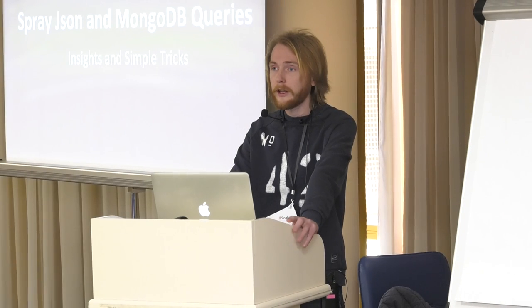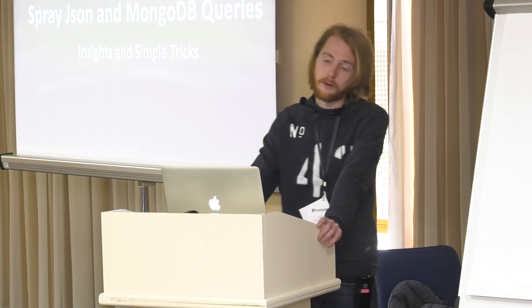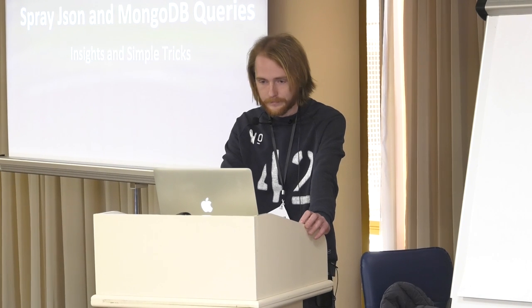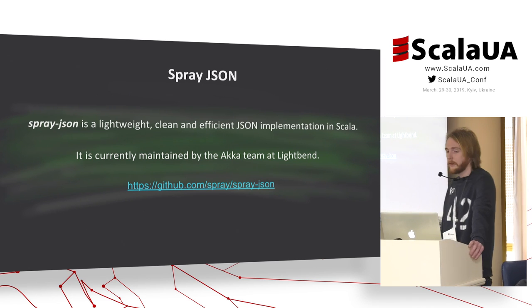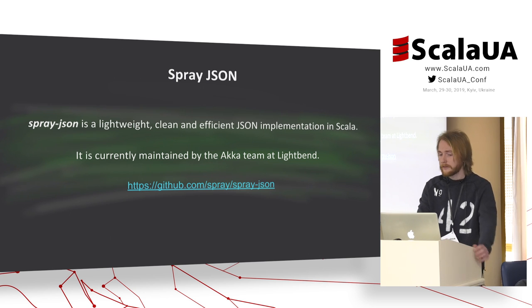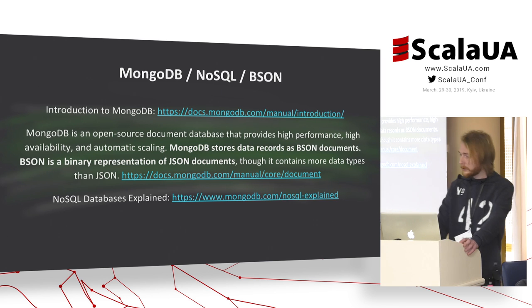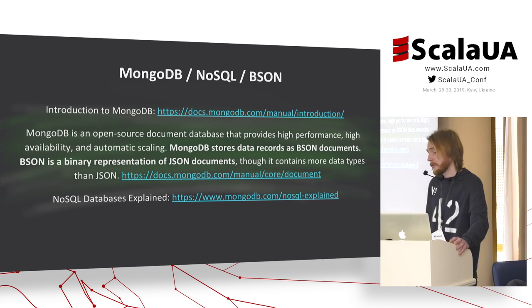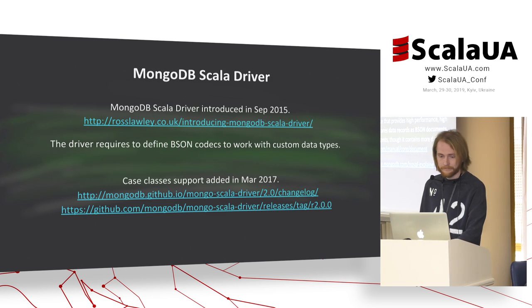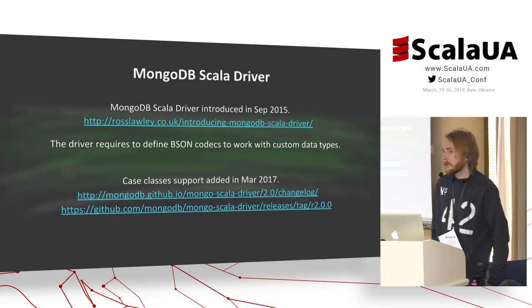Hello, and this presentation will cover creation history and implementation details of a simple extension built on top of the official MongoDB Scala driver. SprayJSON is a lightweight Scala library for JSON serialization, currently maintained by the Akka team at LightBend. MongoDB is a NoSQL database that stores records as BSON documents. The official MongoDB Scala driver was introduced in September 2015.